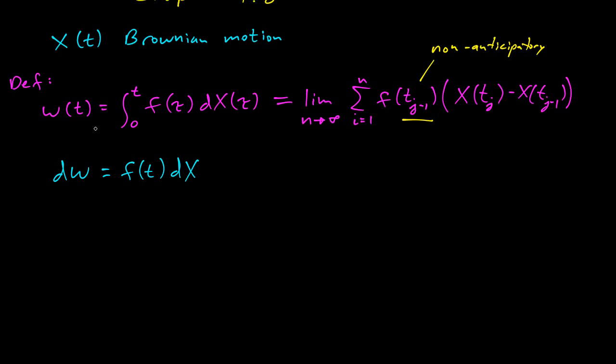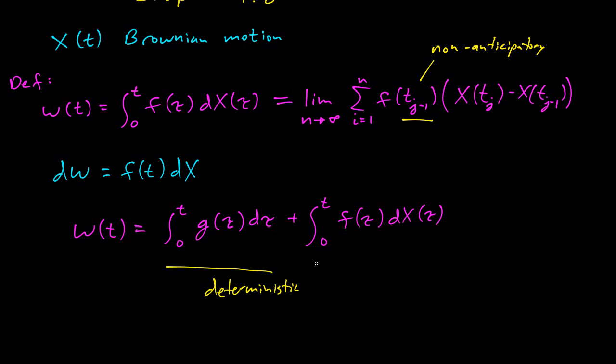Another thing we can do is we can write this integral with a random part and a deterministic part. So something like this: W(t) equals integral 0 to t, g(τ)dτ, plus integral of 0 to t, f(τ)dx(τ). And so here we have this left side is deterministic, and here the right side is the random side.